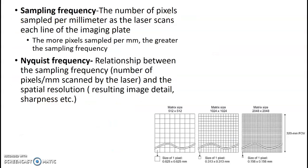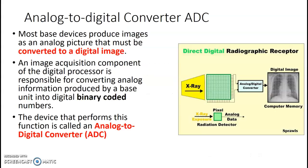Sampling frequency is the number of pixels sampled per millimeter as the laser scans each line of the imaging plate. You might also see the Nyquist frequency — that's the relationship between the sampling frequency and the spatial resolution, which describes how detailed your image is.